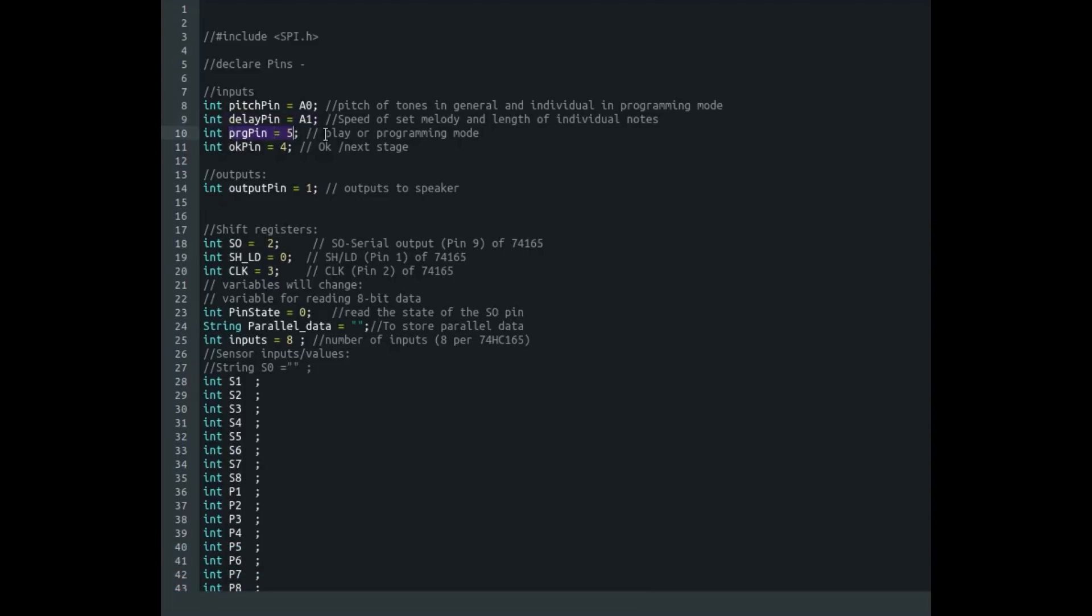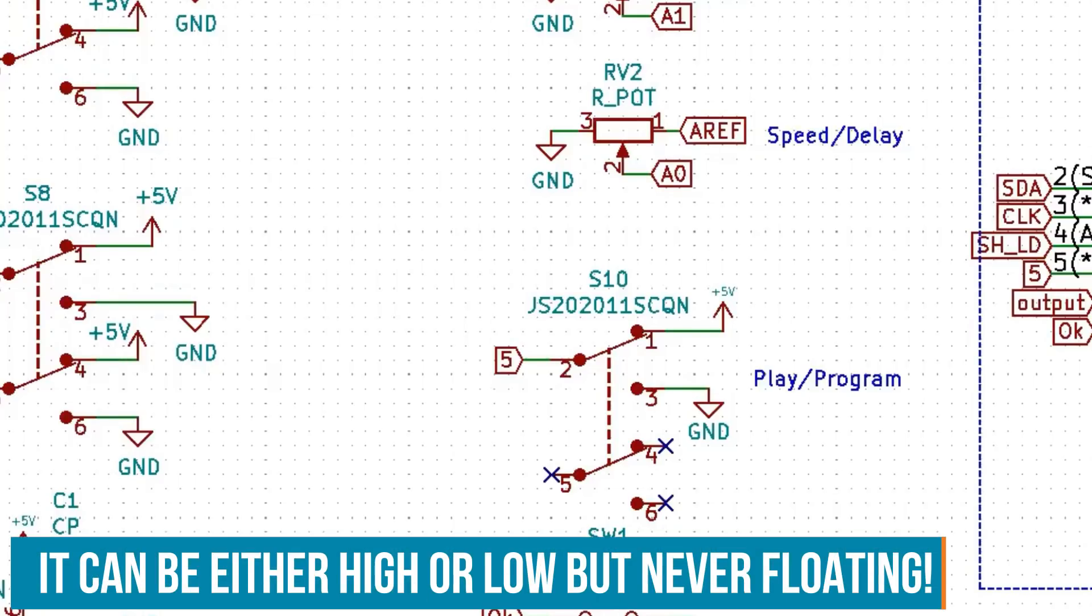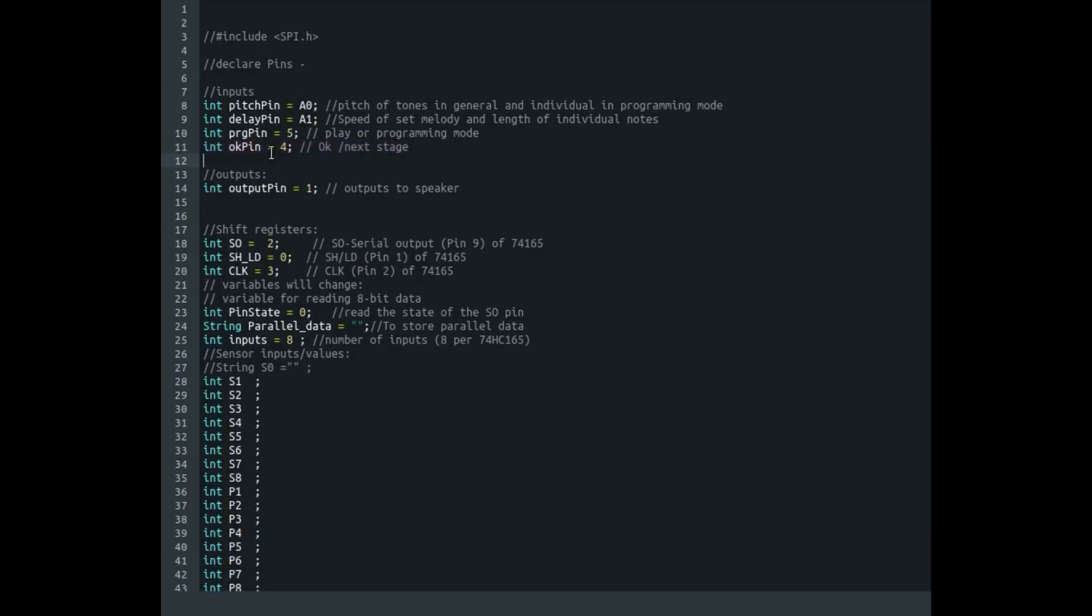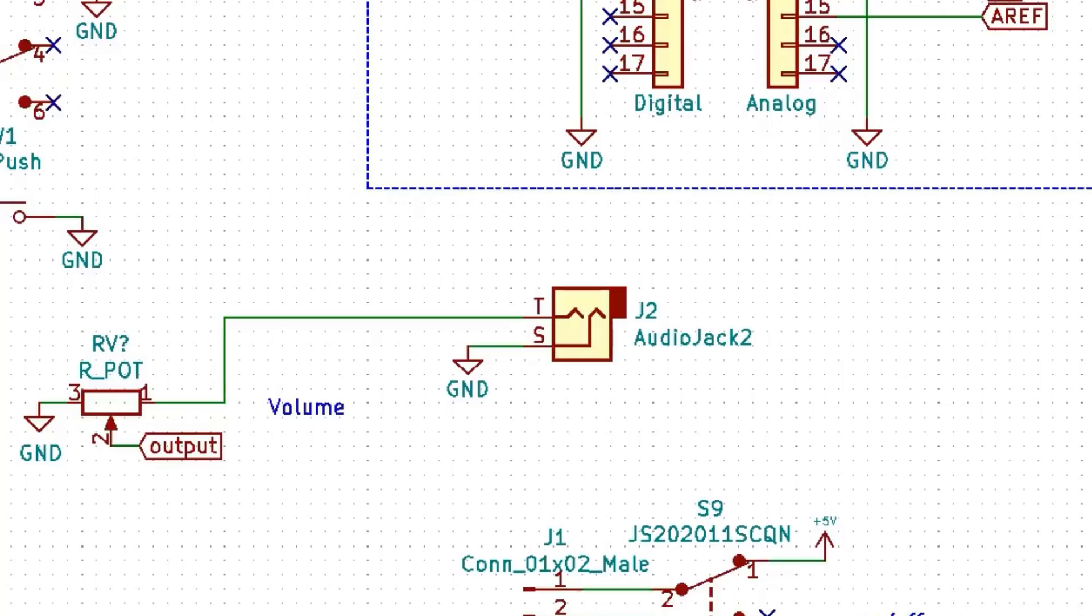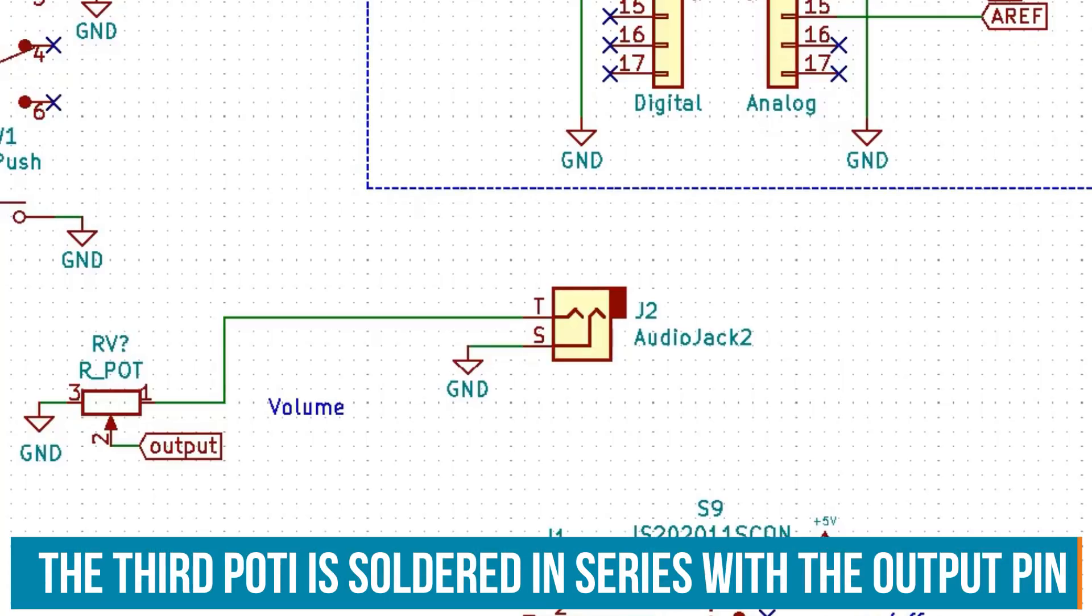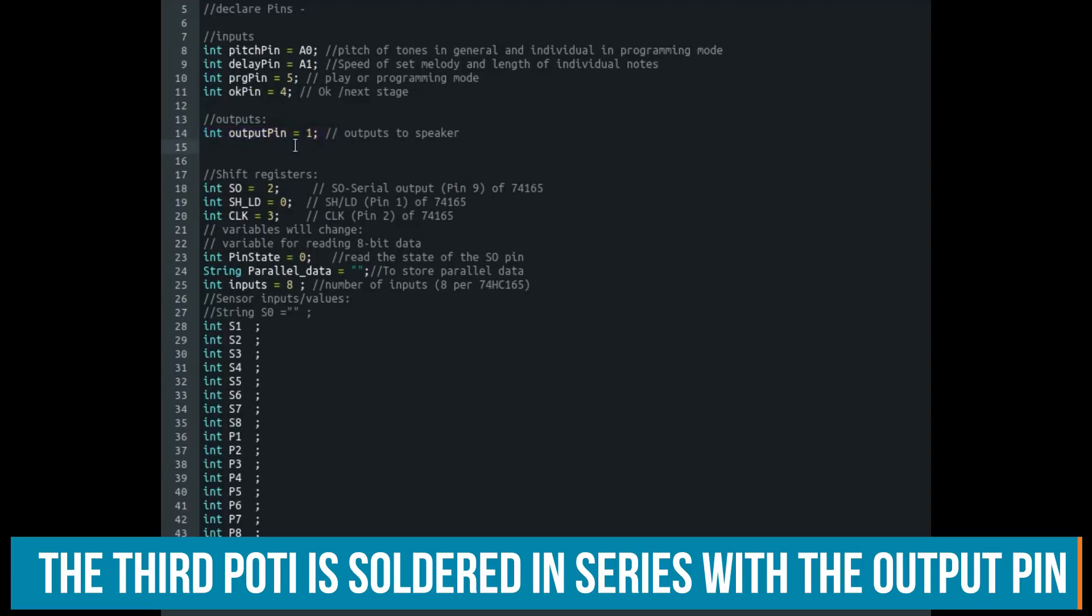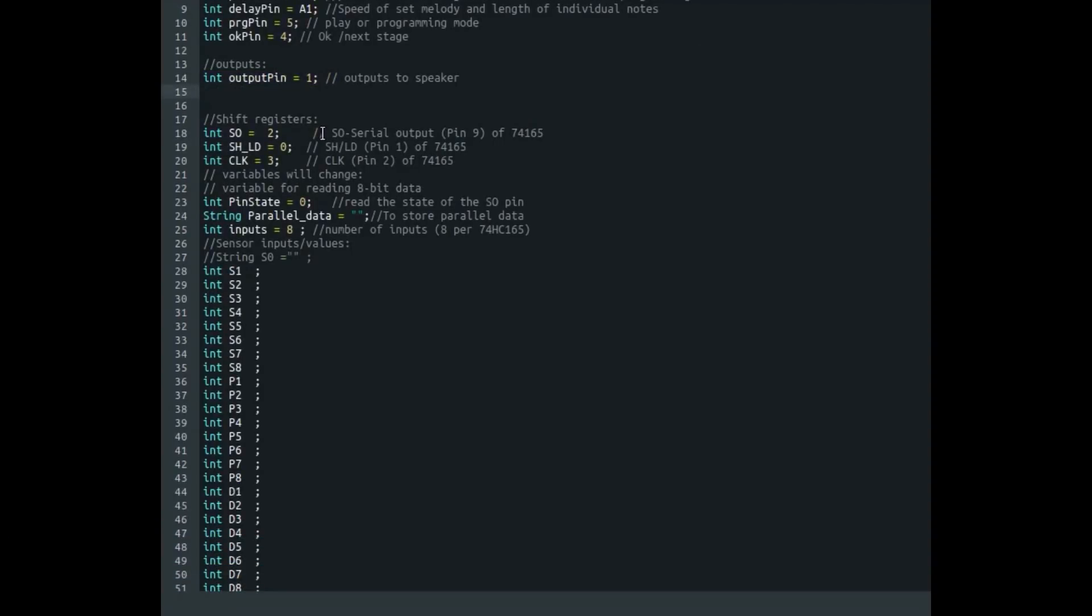This is a toggle switch that triggers the programming mode or the playback mode. And that's the OK pin that I broke. So we are not using that anymore. Then we have the output pin. That is the one that outputs the sound signal to an amplifier and also to the speaker or the headphones, whatever you would like to use.